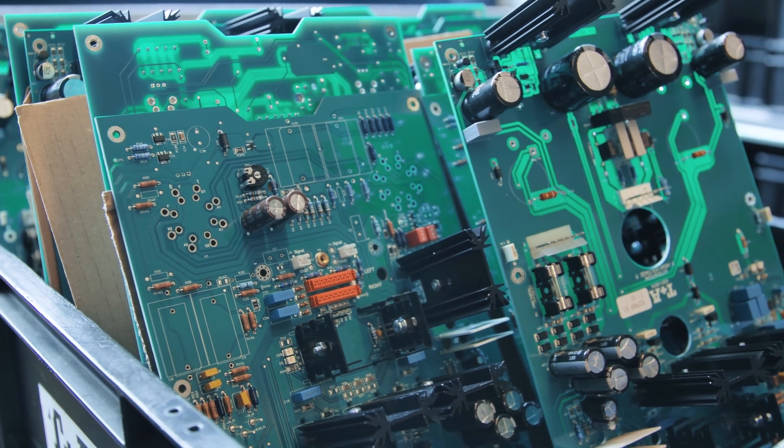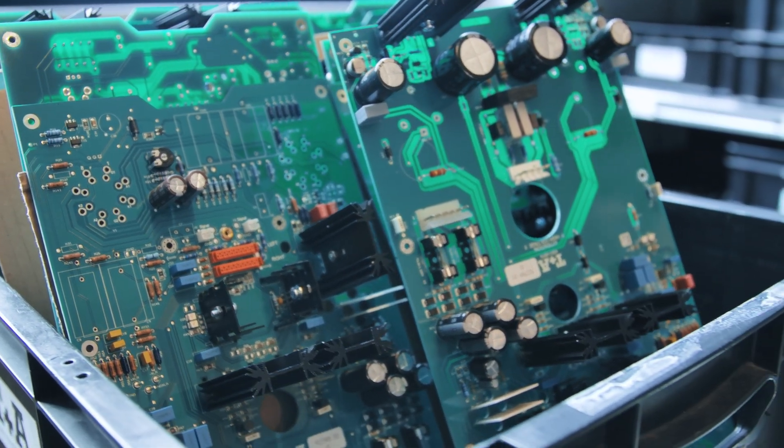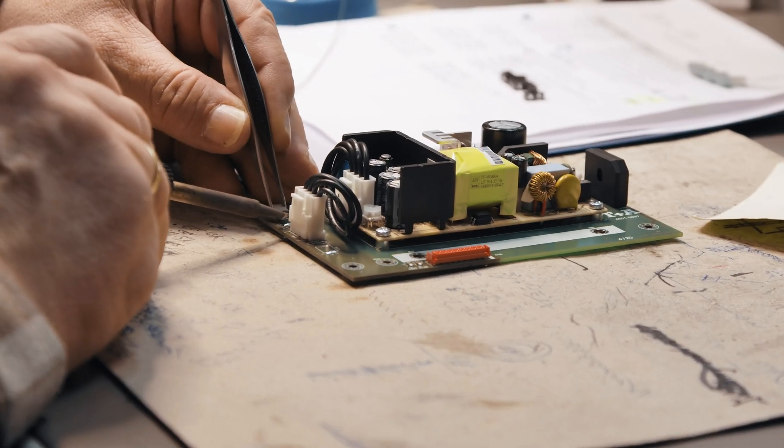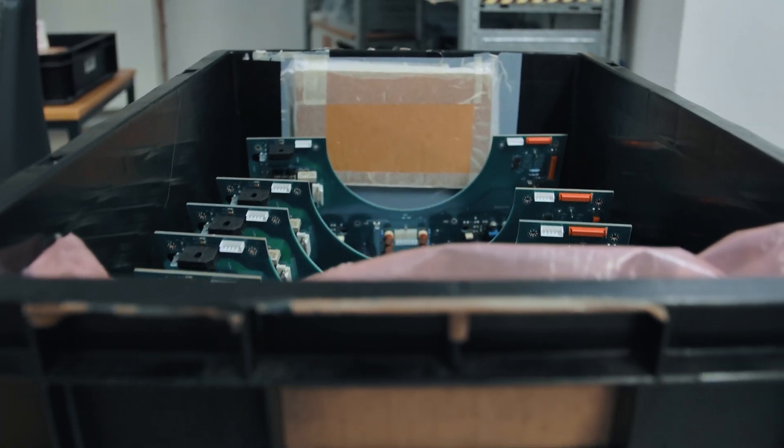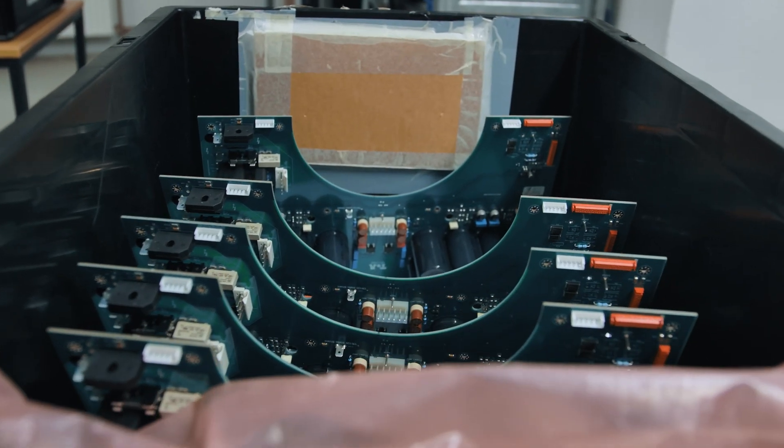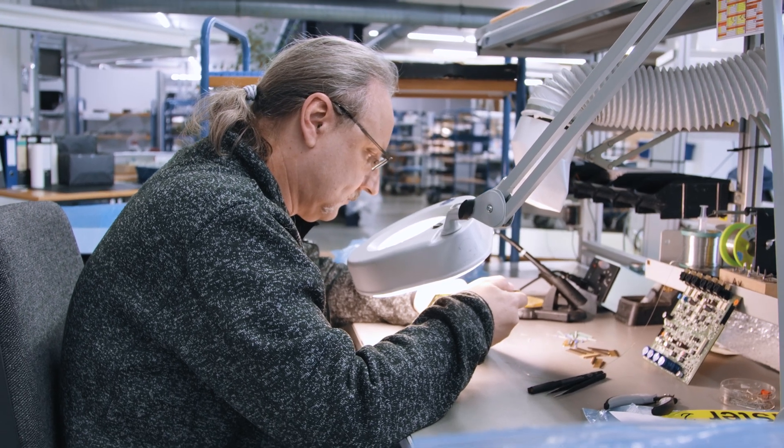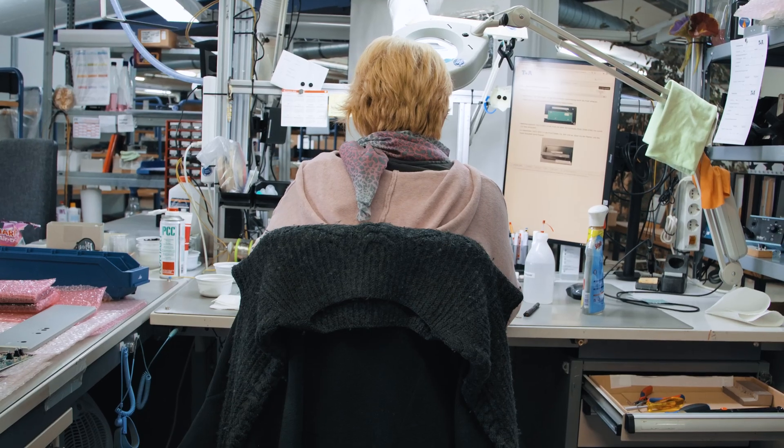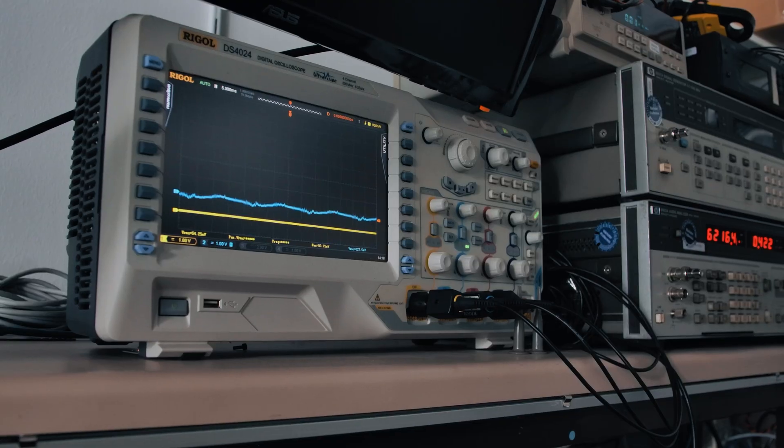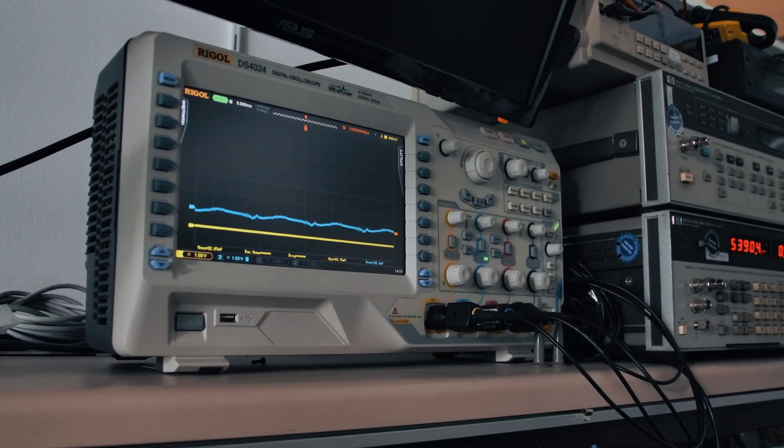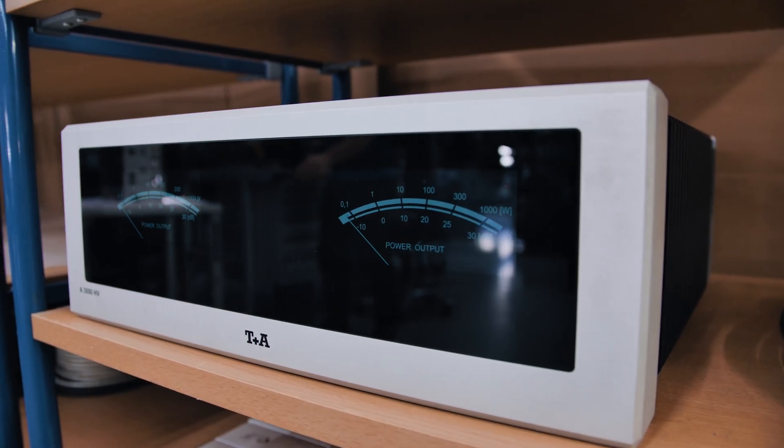HV technology using these high voltages means that we cannot use standard off-the-shelf operational amplifiers. So we have to build the whole circuits from discrete components. But this is another advantage for us because we can exactly select the components as we need them and we are not bound to off-the-shelf components. We can tailor all our circuits exactly to the needs of the amplifier and to the results we want to have.